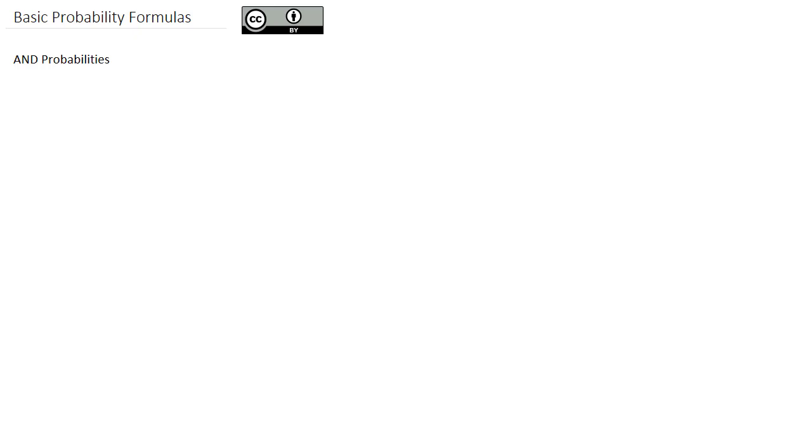The second formula that we're going to look at is the AND probabilities. Please remember all three of these formulas overlap with each other, so I hope you've already watched the previous video and you're about to watch the next video to see how they all work together. With AND probabilities, we want both events, both A and B, to occur together.